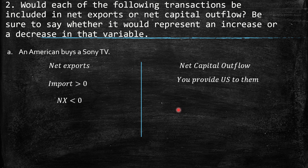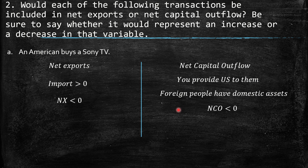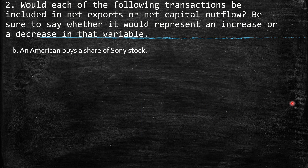What about the capital outflow? You provide US dollars to Sony, so foreign people have domestic assets — the US dollars. The net capital outflow should be exactly the same as the net export. So this trade deficit is financed by this net capital outflow, which is the foreign people holding domestic assets.